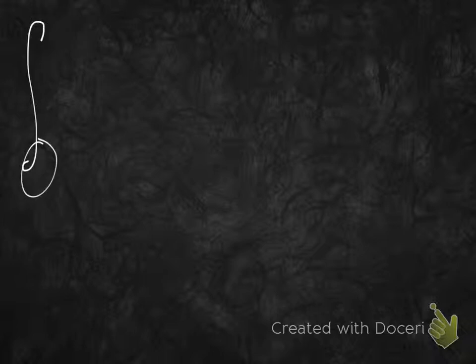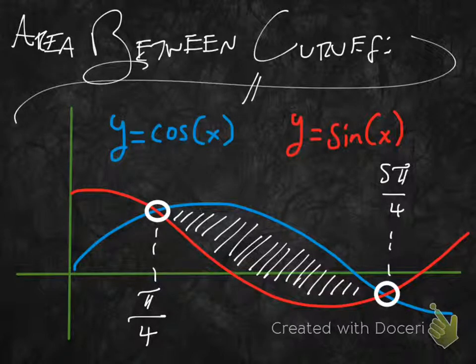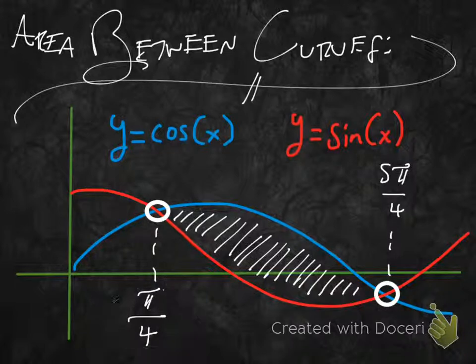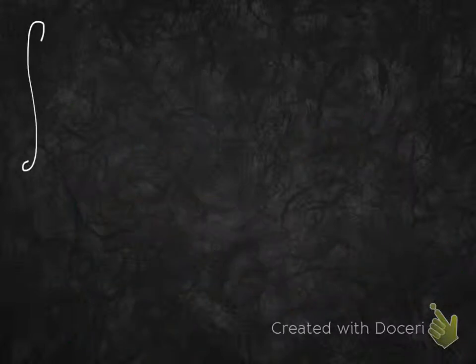Let's go ahead and take our definite integral. This sign tells us to integrate. What will be our upper and lower limits of integration? Well, the first thing we're looking at is π/4 — that would be a really good lower limit of integration; in fact, the only one that's going to work. So we have π/4 on the bottom.